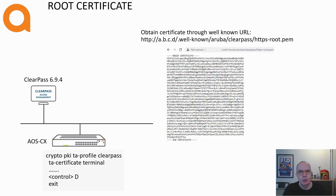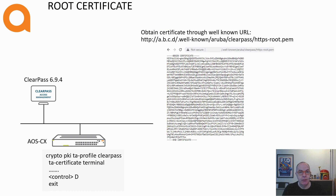For downloadable user roles, a root certificate is required to be installed on the switch. With AOS switch, this was done automatically when entering the command for the downloadable user administrator. On AOS CX, the root certificate must be installed manually, and that is if you are configuring the switch through CLI.